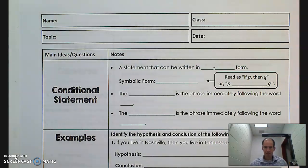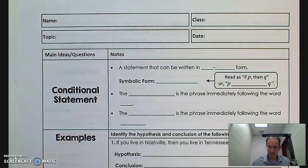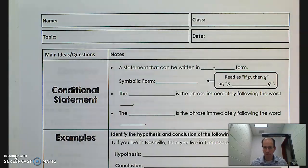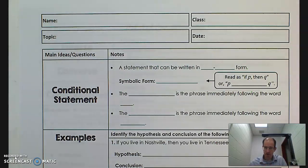So what is a conditional statement? We talked about compound statements and simple statements — two simple statements which we can combine into a compound statement using the words 'and' or 'or' into a conjunction or a disjunction.